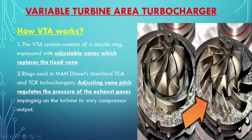The VTA system consists of a nozzle ring equipped with adjustable vanes which replaces the fixed vane. It is equipped with a variable vane ring used in MAN Diesel standard TCA turbochargers. Adjusting the vane pitch regulates the pressure of the exhaust gas impinging on the turbine to vary the compressor output.